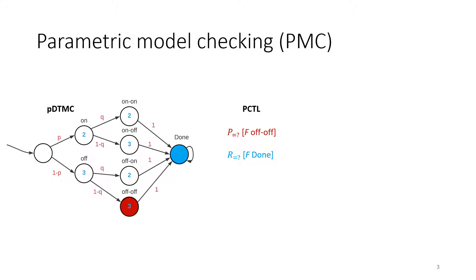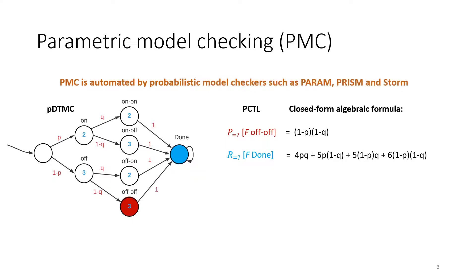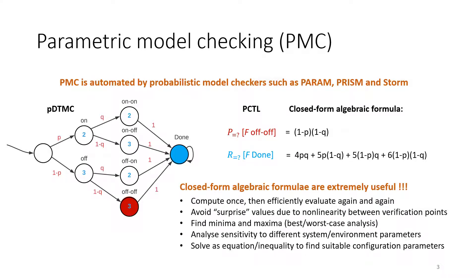Those properties are often specified in PCTL. We then pass the model and PCTL to PMC, which will return the expressions as shown on the right. The underlying process is automated by existing model checkers such as param, PRISM, and STORM. Those obtained algebraic expressions are very useful, and we can perform different analyses based on such expressions.